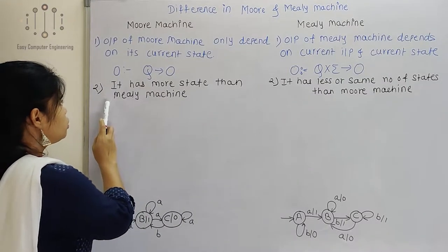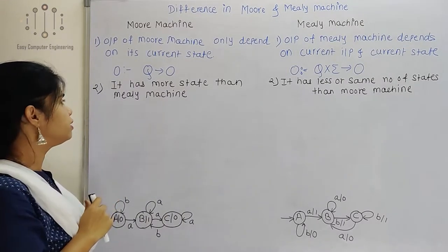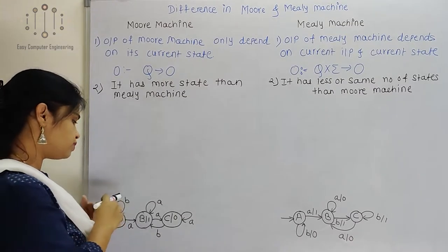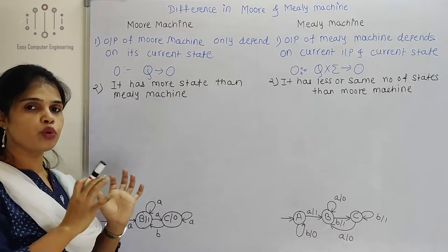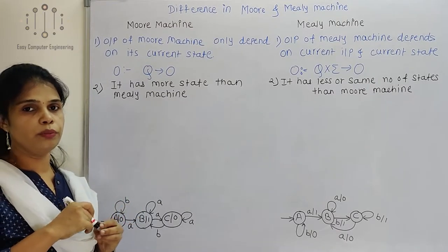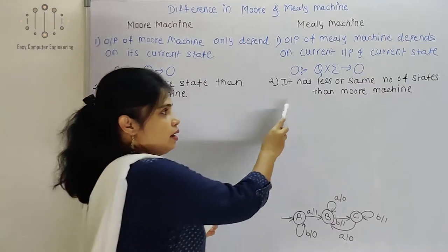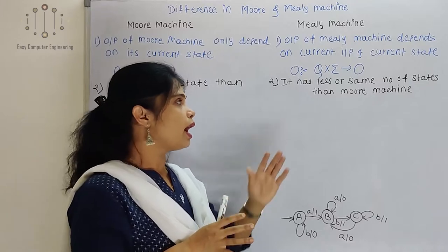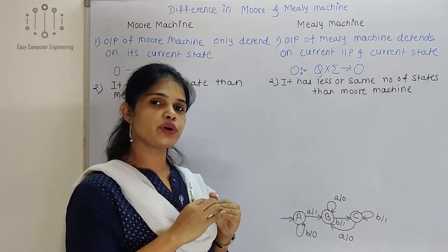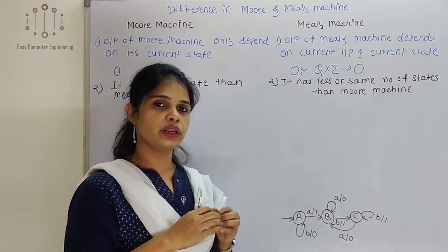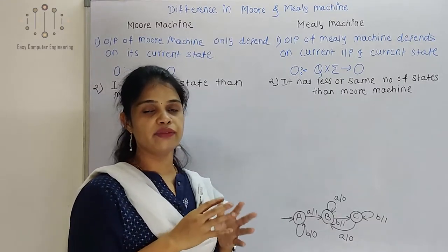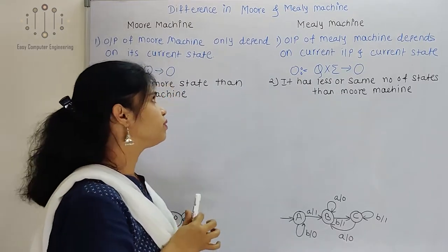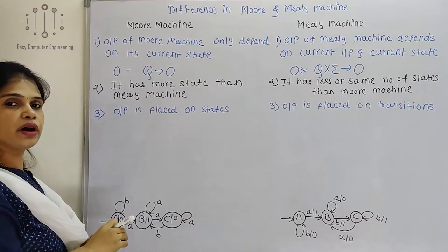This is the second difference. In Moore machine, it has more states than Mealy machine. Means in many examples, if some language is given, we need to take more states comparatively to Mealy machine. In Mealy machine, there are less or same count of states as in Moore machine. We already saw a number of examples where we can see how many states are required for Moore and Mealy.